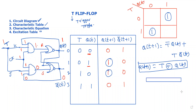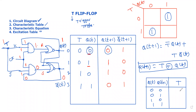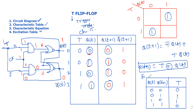Next is the excitation table. The inputs are Q(t) and Q(t+1), and the flip-flop input is the single input T. The rows are: Q(t)=0→Q(t+1)=0 gives T=0; Q(t)=0→Q(t+1)=1 gives T=1; Q(t)=1→Q(t+1)=0 gives T=1; Q(t)=1→Q(t+1)=1 gives T=0.